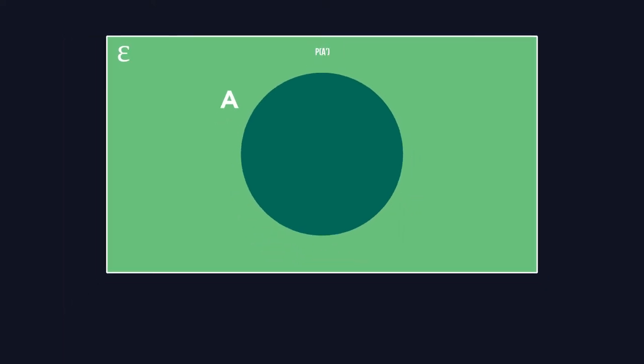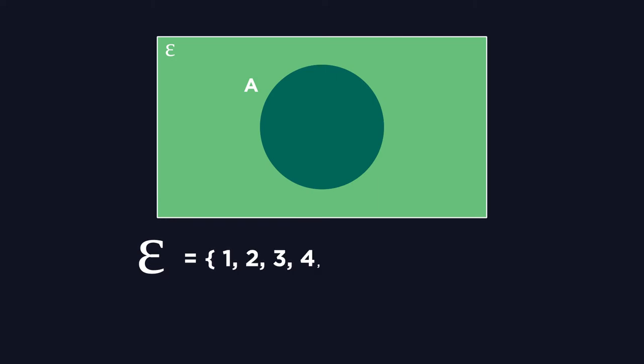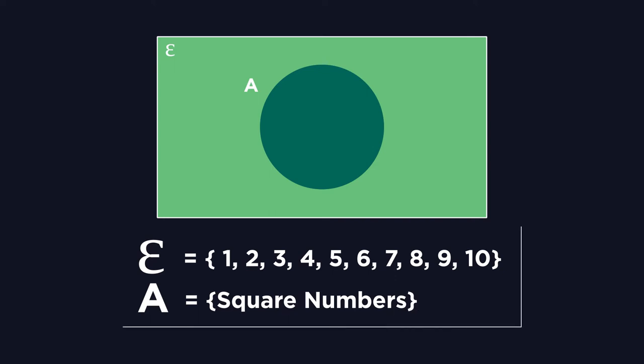Now imagine that the universal set contains the integers between 1 and 10, and set A contains only square numbers. The notation for this would look like this. Pause the video and see if you can work out where the values should go. Within a Venn diagram, the values would lie as such, with the square numbers 1, 4 and 9 within the set A.